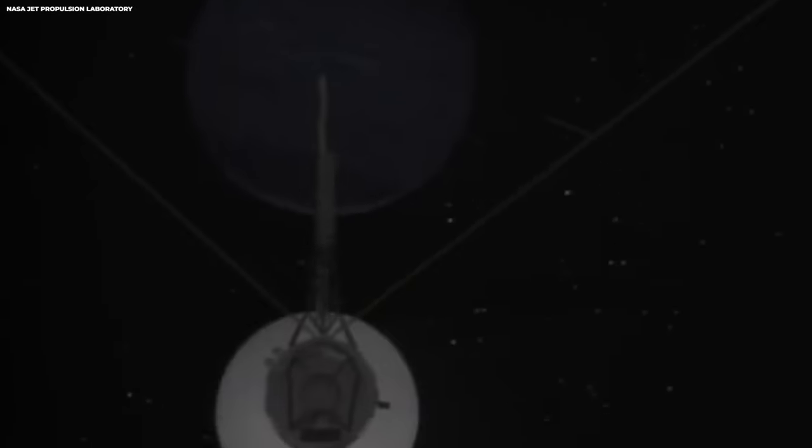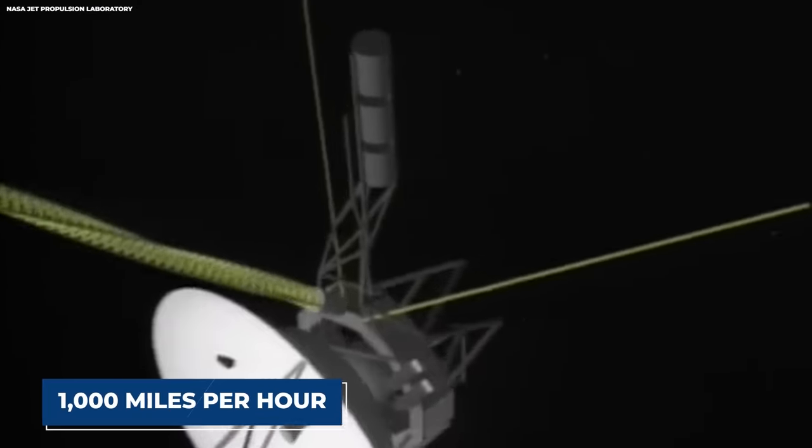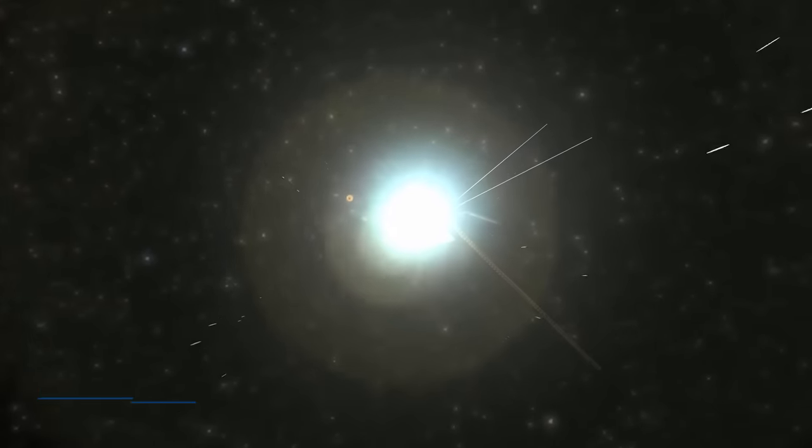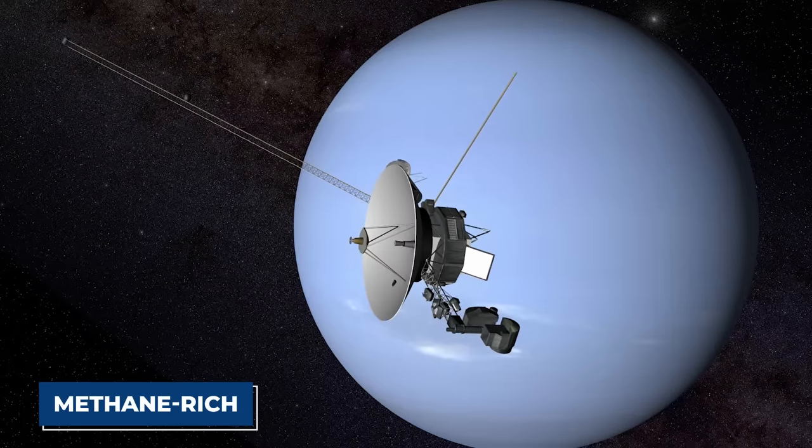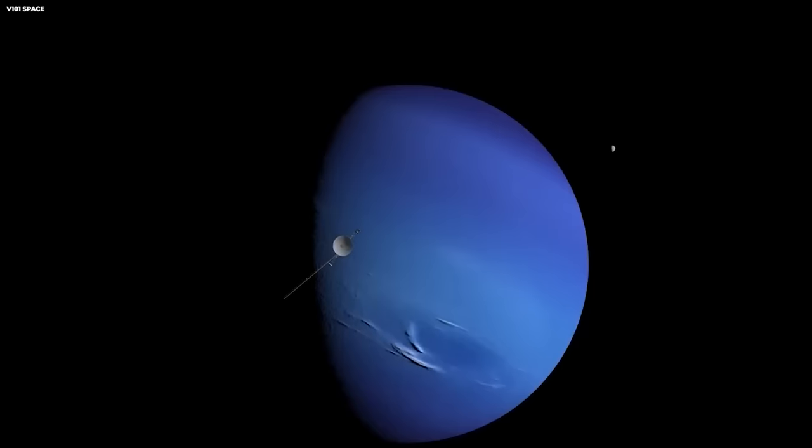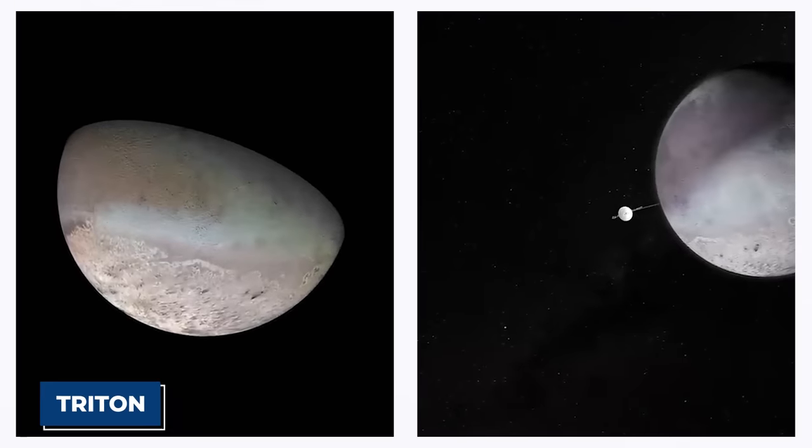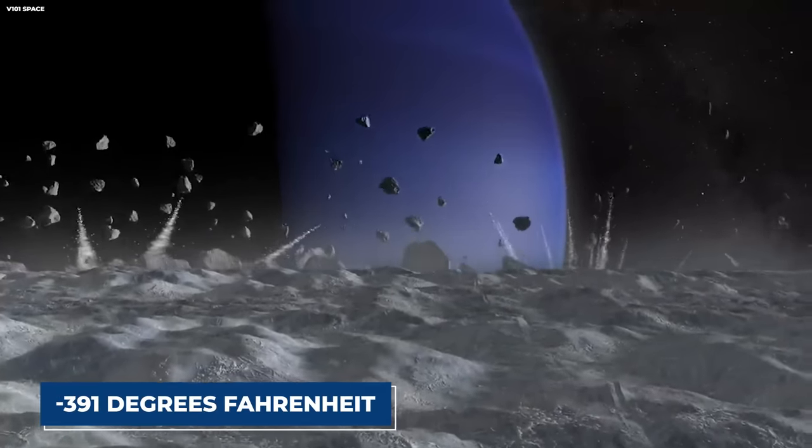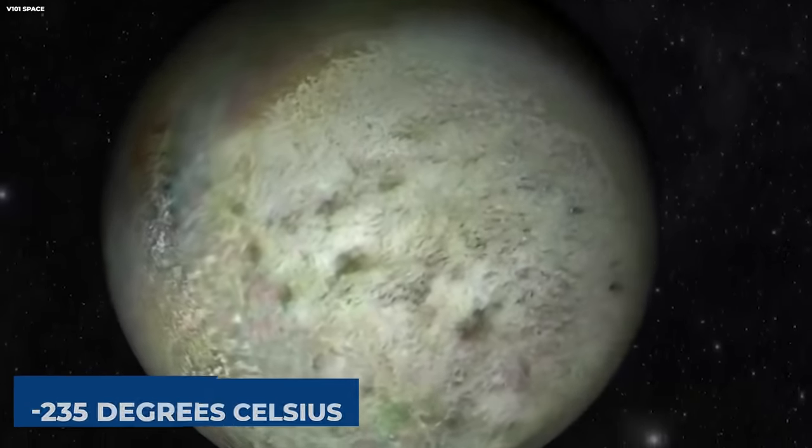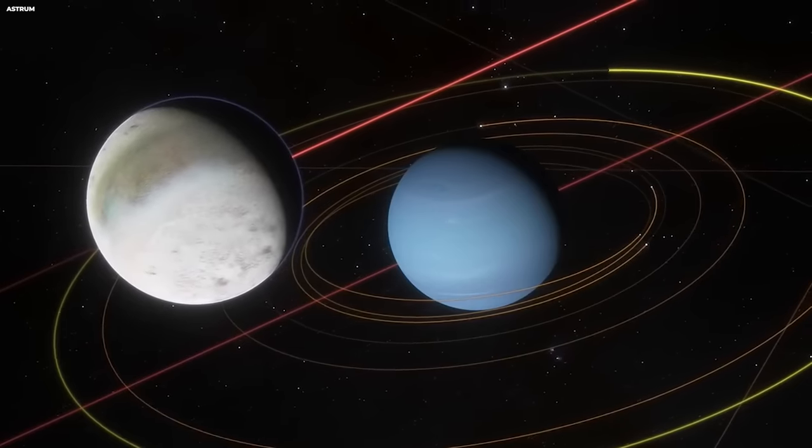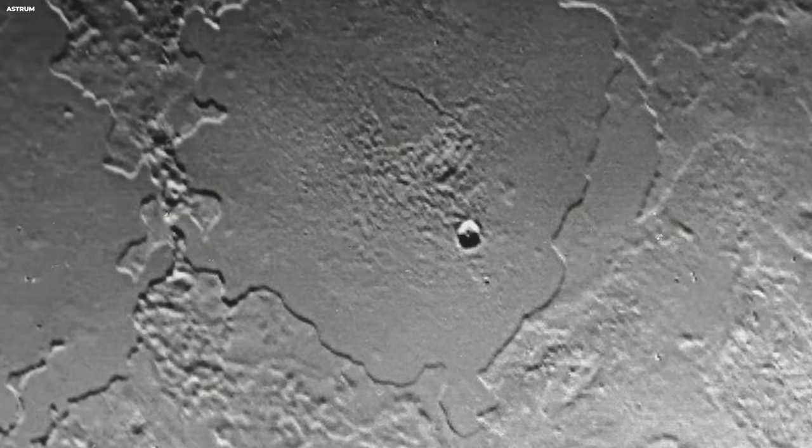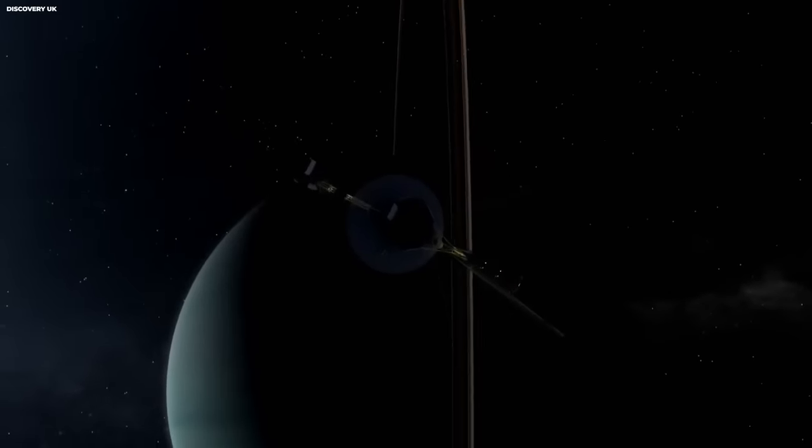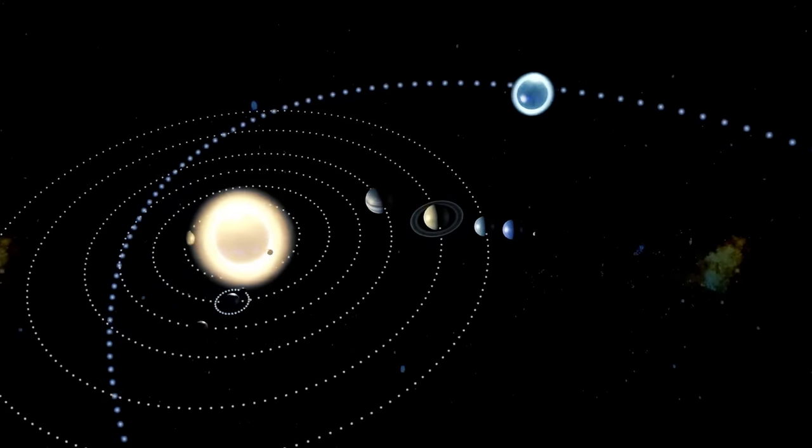During its encounter with Neptune, Voyager 2 recorded wind speeds of up to 1,000 miles per hour, making it the fastest wind ever recorded on a planet in our solar system. As the spacecraft passed within 2,980 miles of Neptune's azure, methane-rich atmosphere, it provided unprecedented insights into this distant world. Triton, Neptune's largest moon, was found to be one of the coldest places in the solar system, with surface temperatures plummeting to minus 391 degrees Fahrenheit, minus 235 degrees Celsius. Triton also exhibited unique features, including ice volcanoes that ejected nitrogen gas and icy particles five miles into its thin atmosphere. These discoveries expanded our understanding of the variety and complexity of celestial bodies in our solar system, even in the outermost regions.